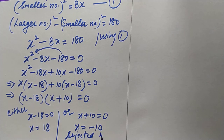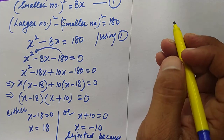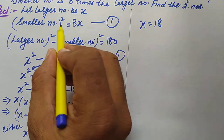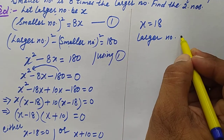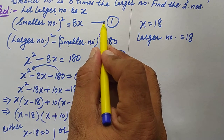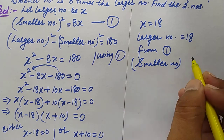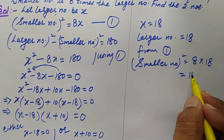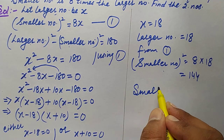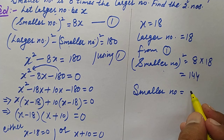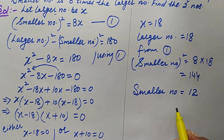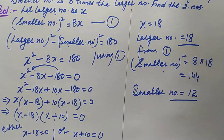So x equals 18 is our answer, meaning the larger number is 18. From equation one, smaller number squared equals 8 times 18 equals 144. Therefore, the smaller number is the square root of 144, which is 12. So the two numbers are 12 and 18. Thanks for watching — please subscribe to my channel to get notifications of new videos.